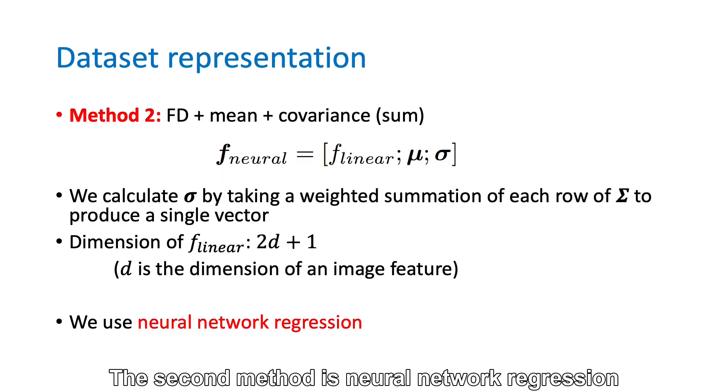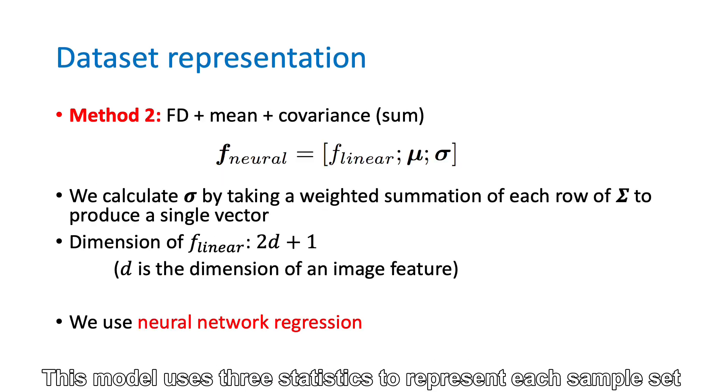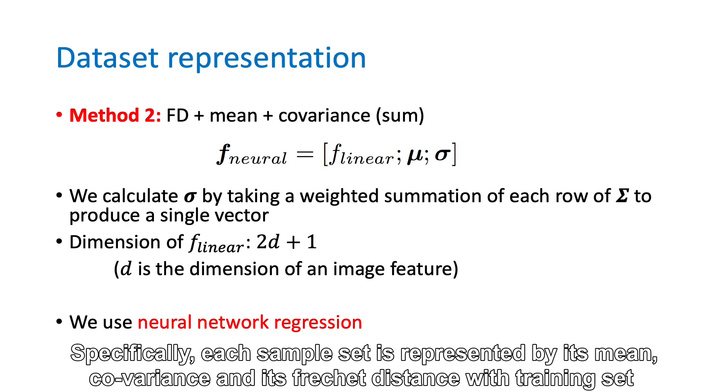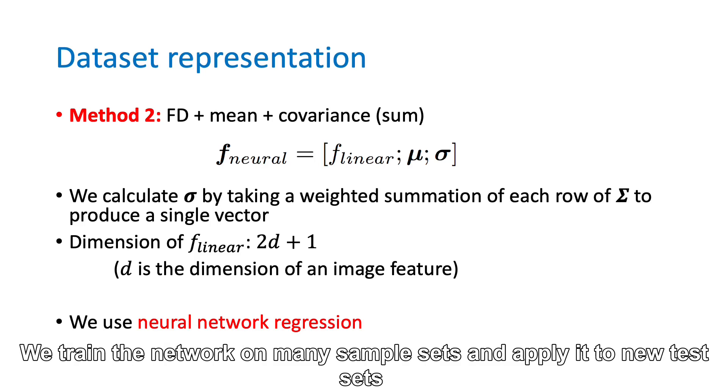The second method is neural network regression. This model uses three statistics to represent each sample set. Specifically, each sample set is represented by its mean, covariance, and its Fréchet distance with the training set. We train the network on many sample sets and apply it to new test sets.